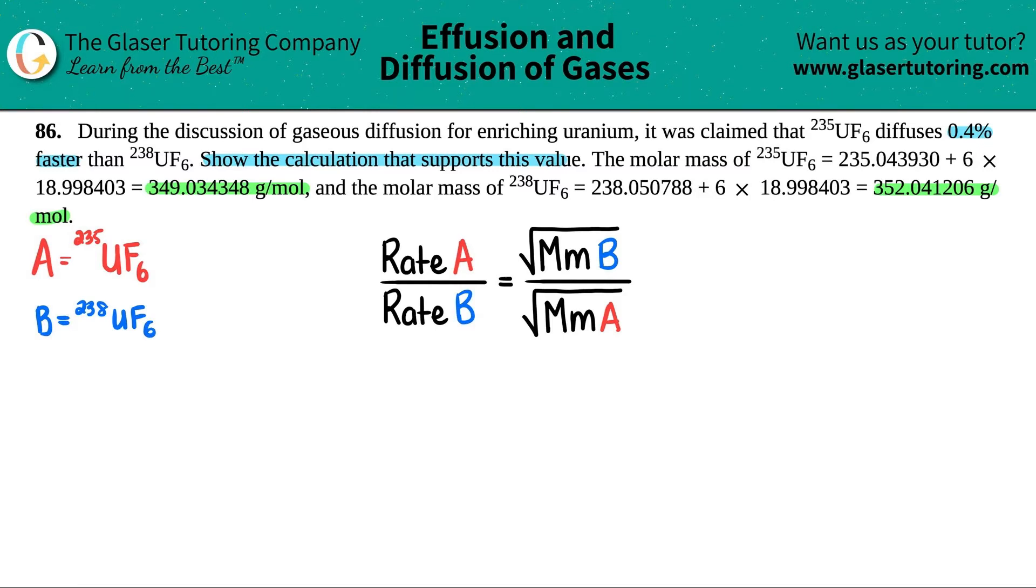So in this case, I'm just going to show the calculation that will get me to 0.4%. I'm going to erase A and B, and I'm just going to put the UF6. So this would be UF6 235, and then this would be UF6 238. Now in this case, remember the reds crisscross.